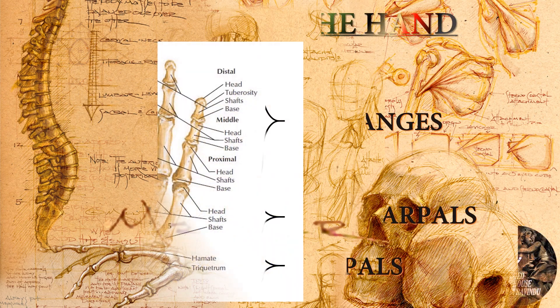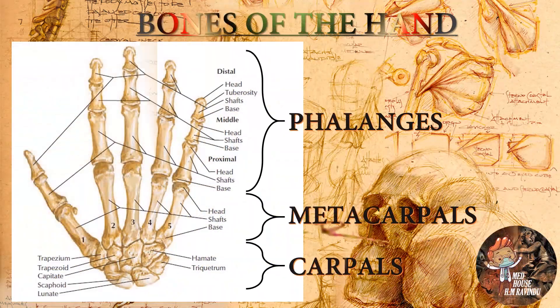Finally, let's talk about the bones of the hand region. The bones of the hand region can be subdivided into three groups: carpal bones, metacarpal bones, and phalanges bones.